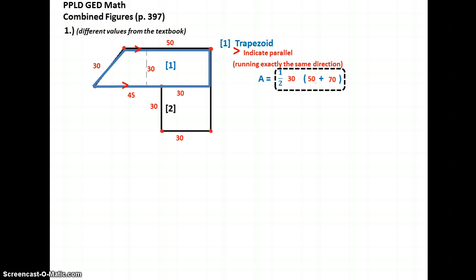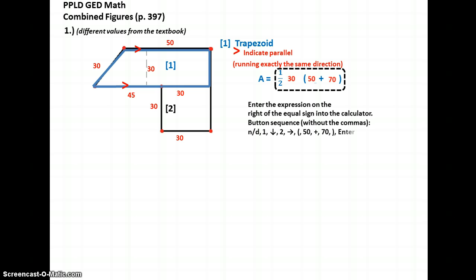Within the black dotted line, everything on the right side of the equal sign is the expression that you can type into the calculator. Here's the button sequence to do that on the calculator, but you're not going to use the commas that I have in between the button hits indicated here. And when you do, the area comes out: 1,800 square units.